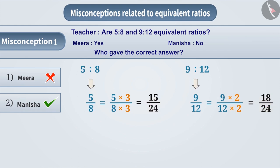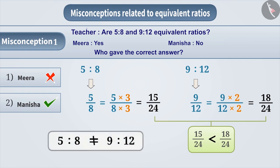The denominators of both the fractions are now the same, but the numerators are different. Here, 15 by 24 is less than 18 by 24. We can say that 5 is to 8 and 9 is to 12 are not equivalent ratios.